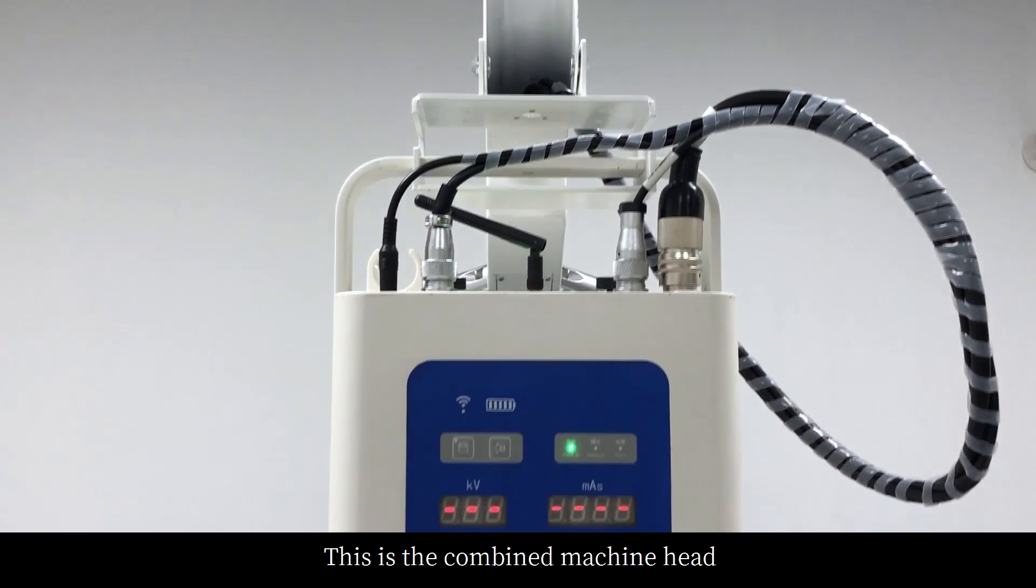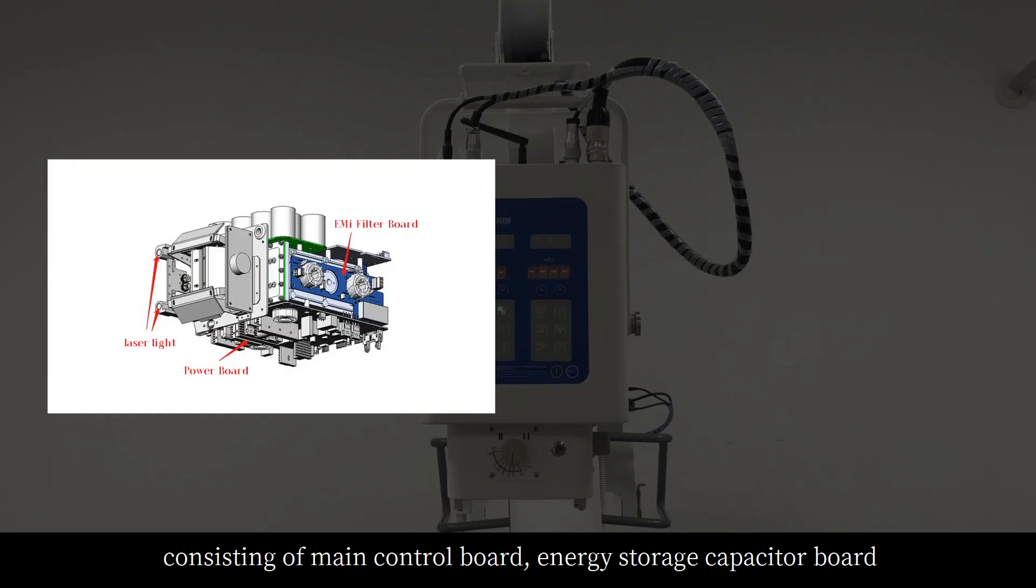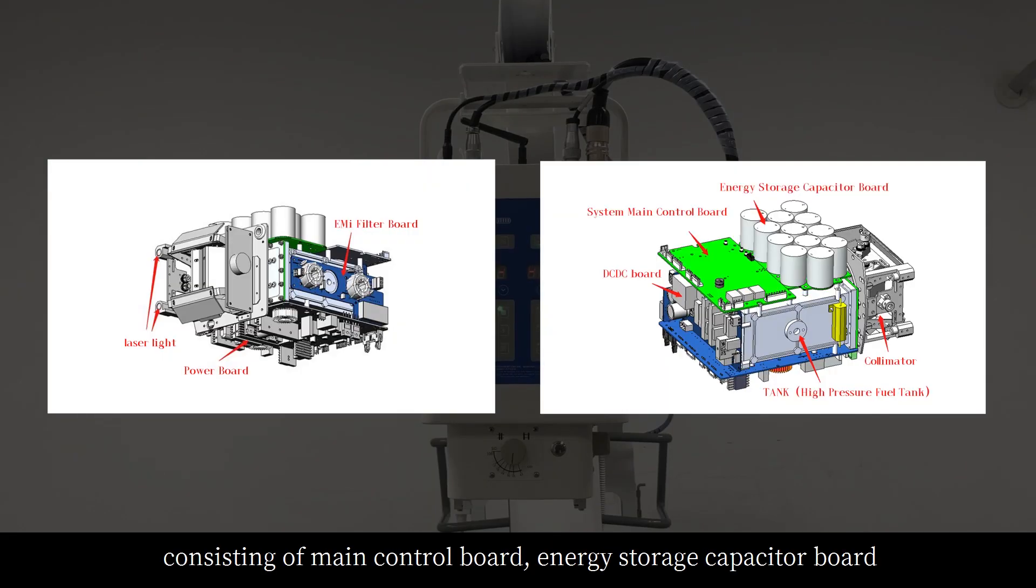This is the combined machine head, consisting of main control board, energy storage capacitor board, high voltage fuel tank, etc. The main function of the head is to emit X-rays.